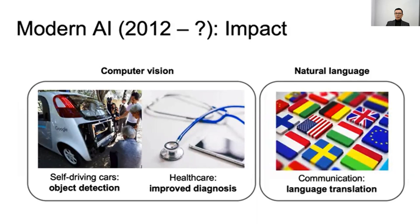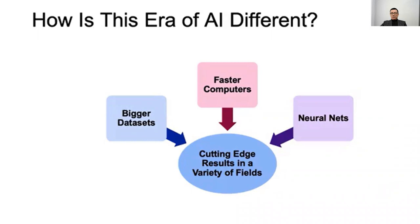From natural language processing, there is language translation. Now we can use Google Translate to translate from any language to another. How is this era of AI different? Data sets are getting bigger and bigger, so AI can work with a huge number of data — big data.